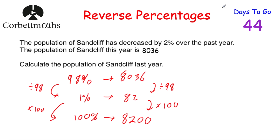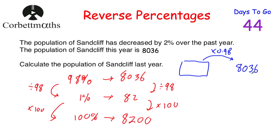Another approach is to use multipliers. The population of Sandcliffe last year was decreased by 2%, so the multiplier would be 0.98. That gave us 8,036. To go backwards, we divide by the multiplier: 8,036 divided by 0.98 equals 8,200. Either approach gives the same answer.